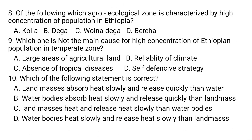Question number eight: which agroecological zone is characterized by the highest concentration of population in Ethiopia? There are five agroecological zones in Ethiopia. A) Kolla, B) Dega, C) Weina Dega, D) Bereha. Dega is the most highly populated agroecological zone in Ethiopia.